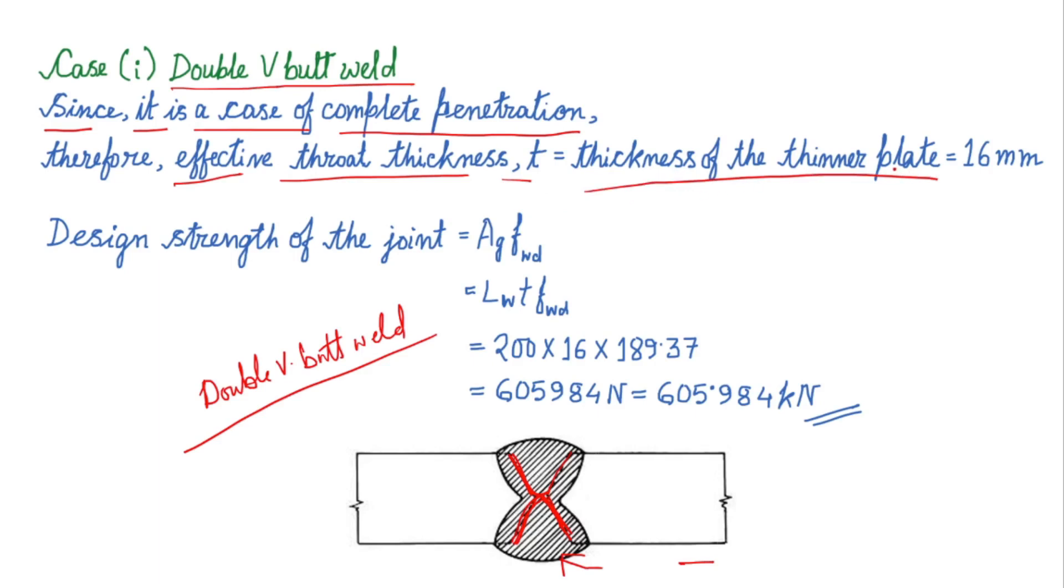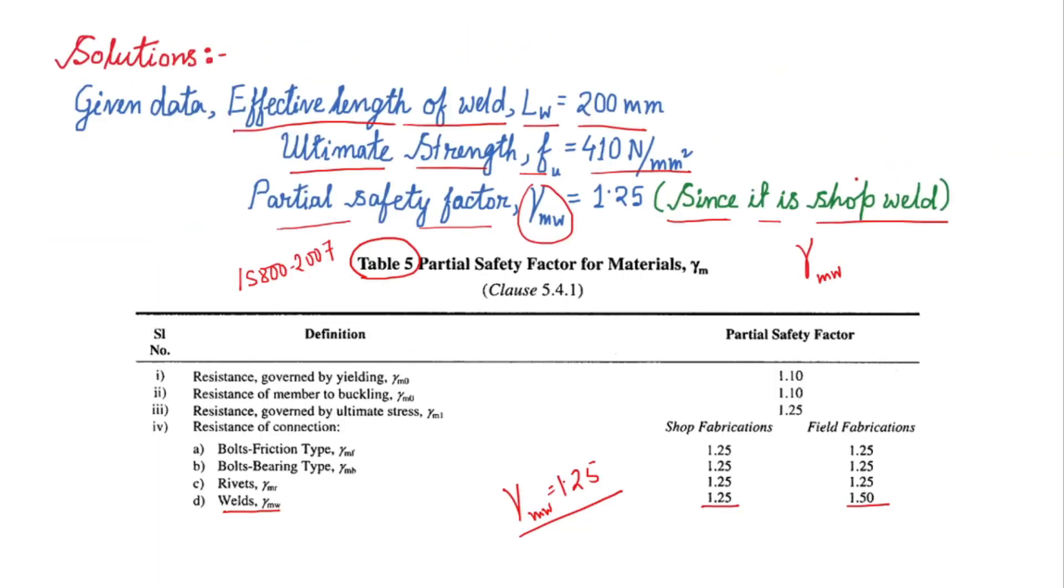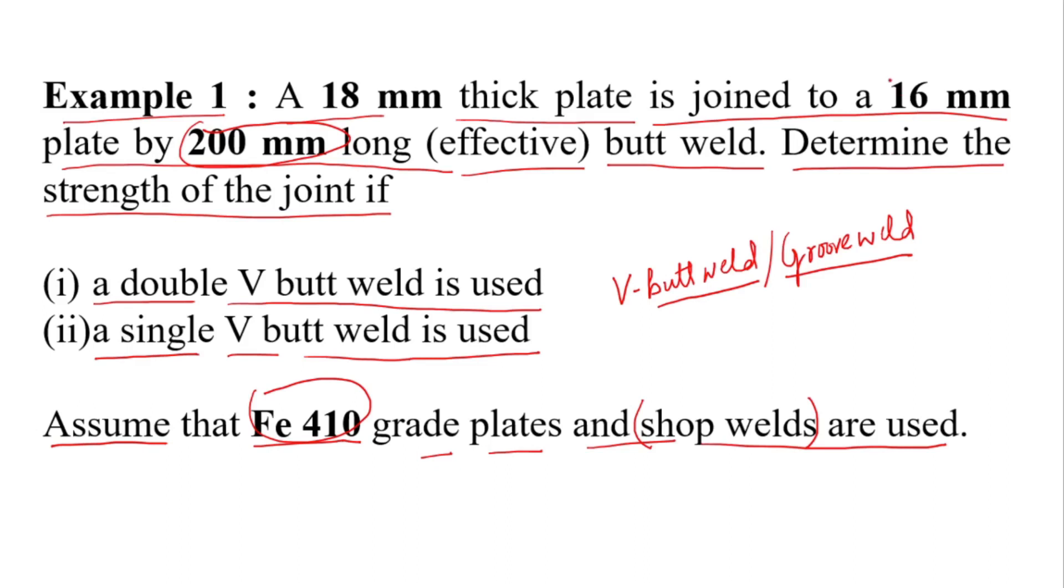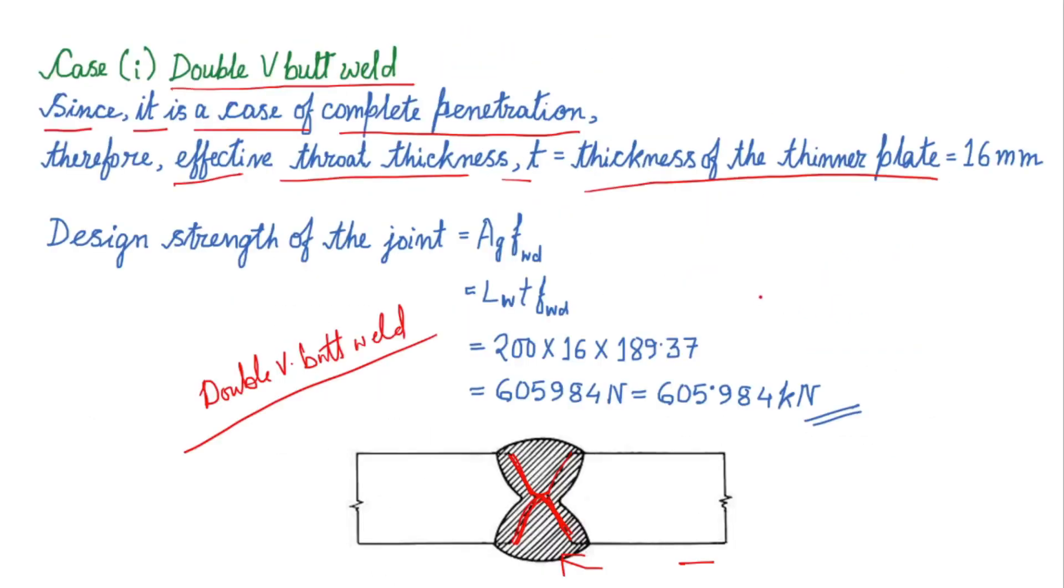Therefore the effective throat thickness t equals thickness of the thinner plate. So effective throat thickness in this case is the thickness of the thinner plate. So in this connection we have to join one 16mm plate and another 18mm plate, so the thickness of the thinner plate is obviously 16mm.